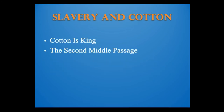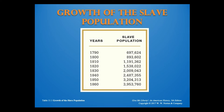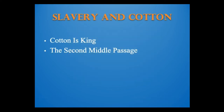By 1820, slavery was an old institution in America. With abolition in the northern states, the peculiar institution of slavery became unique to the South. By the Civil War, the slave population had increased to nearly 4 million, and slavery had spread to Arkansas, Louisiana, and eastern Texas. Slaves were one-third of the South's entire population and half of the population in the cotton states of the Deep South. Slavery's expansion was due to the growth of cotton production, which replaced sugar as the world's major slave crop.